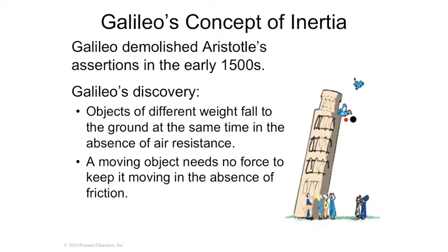So Galileo went up to the top of a tower — the Pisa tower that's still leaning now. It was leaning in the 1500s. And he threw a big cannonball and a small cannonball, launched at the same time. And to everyone's amazement, they hit the ground at the same time. So you now have this idea that experimentation is the way you figure out truth, not just conceptualization or philosophy. He discovered that different weights hit the ground at the same time.